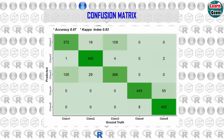A confusion matrix represents the difference between the actual and predicted classifications of a model. It is used to easily recognize how often a classification system mislabels one classification as another. A confusion matrix visualizes and summarizes the performance of a classification algorithm.